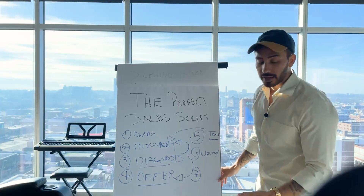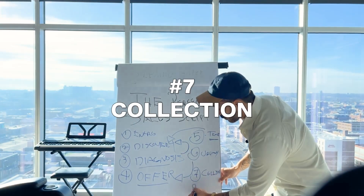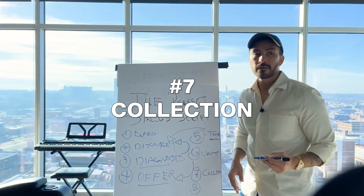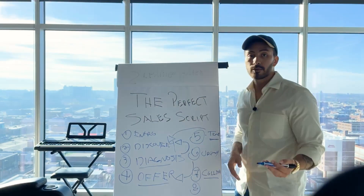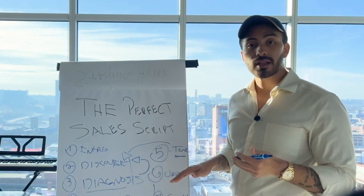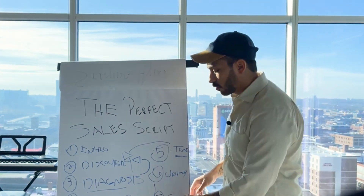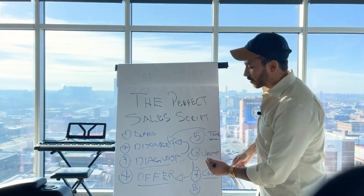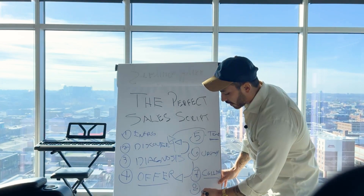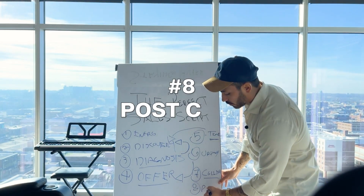Number seven is collection. The collection phase is almost like its own part of the sales call, because people deal with so many things: 'I don't have the money,' 'I need to borrow the money,' 'where can I get the money?' There are so many ways to navigate the collections phase — it's almost like a tiny sales call within the sales call.